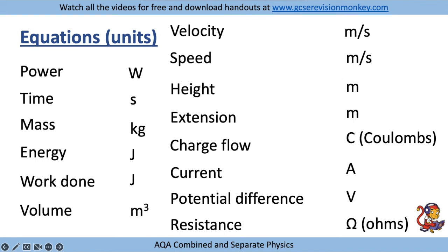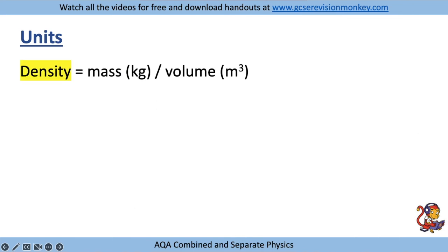The rest of the units you need for paper one you should be able to work out using the equations. For density, the equation is density equals mass divided by volume. If you remember mass is in kilograms and volume is in metres cubed, then kilograms divided by metres cubed gives you the units for density.